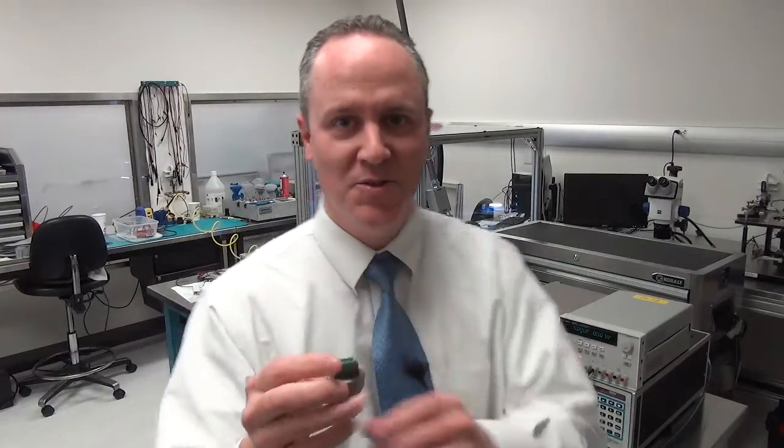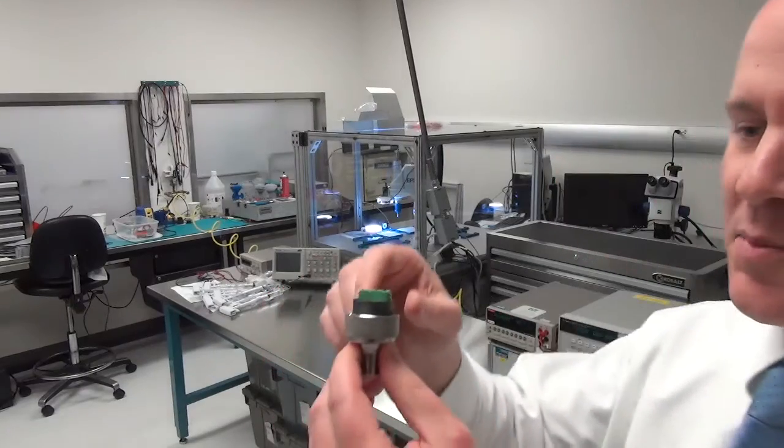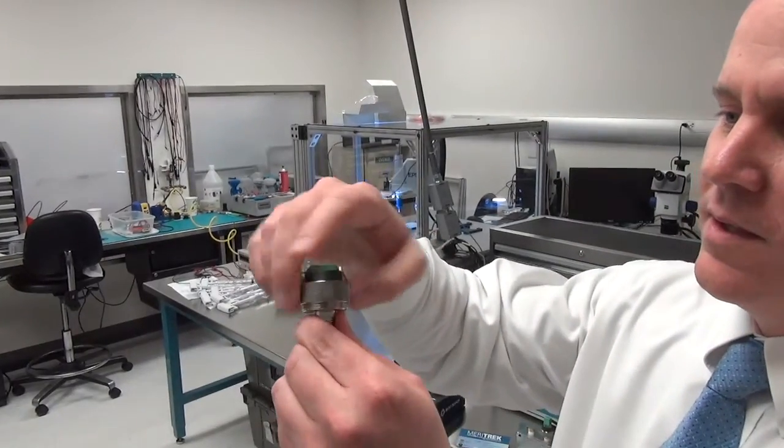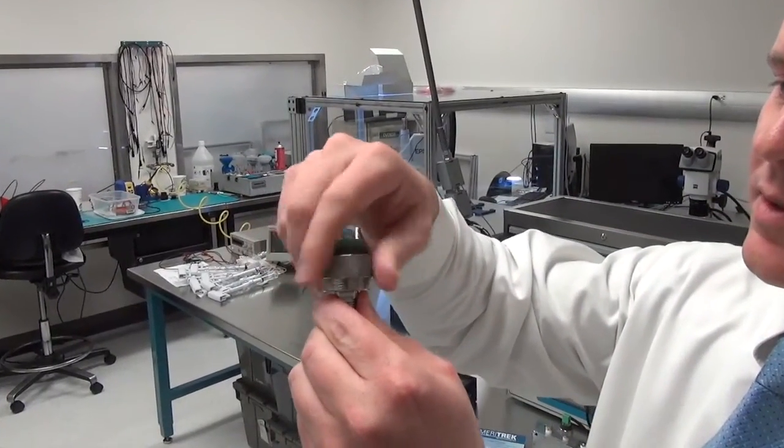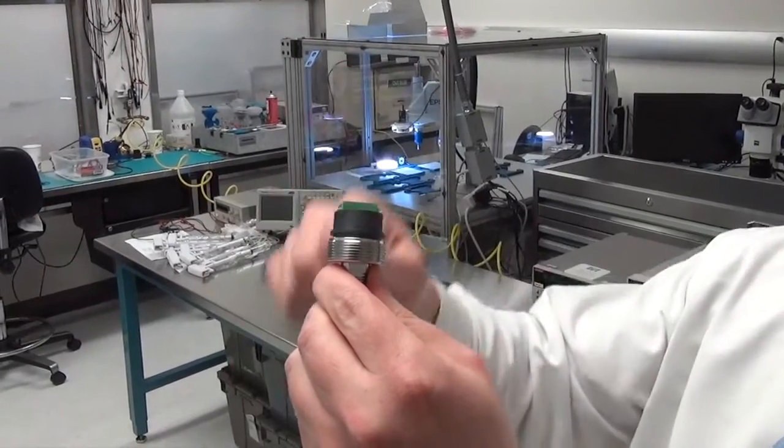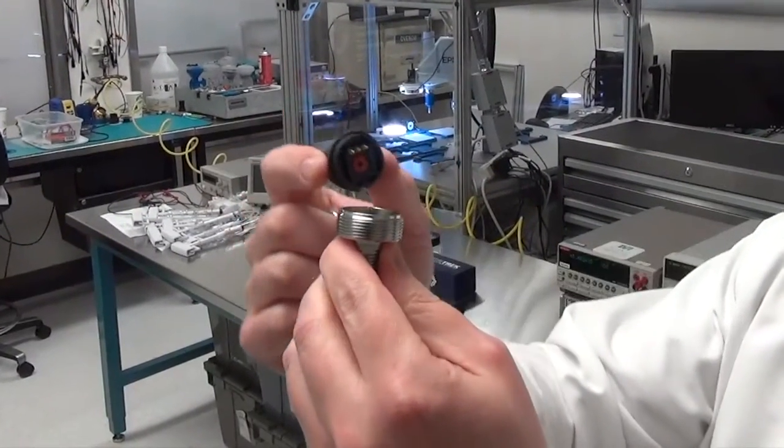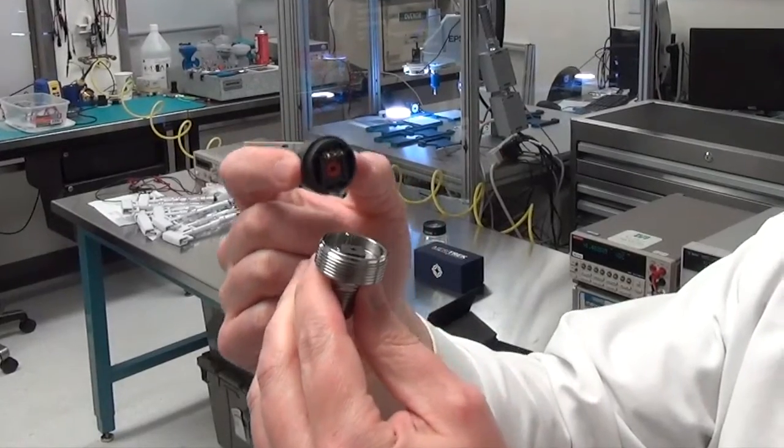I'm going to step around and get a little closer to the camera so you can see this taken apart. Simply unscrew the top knurled nut, remove the electrical housing, the top part of the housing.